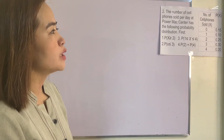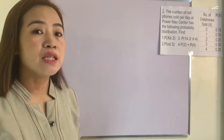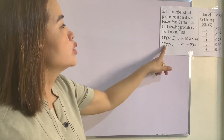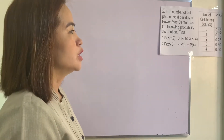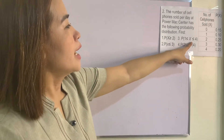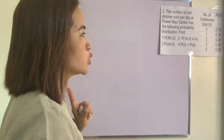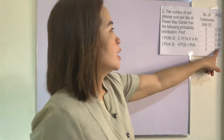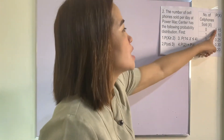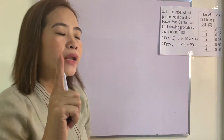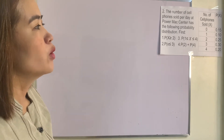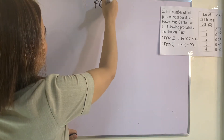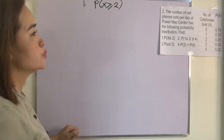Example 2: the number of cell phones sold per day at Power Max Center has the following probability distribution. We need to find: (1) P(X ≥ 2), (2) P(X ≤ 3), (3) P(1 ≤ X ≤ 4), and (4) P(2) + P(4). Since this is already stated to be a probability distribution, the sum of all probabilities equals 1 and we will not verify it again.